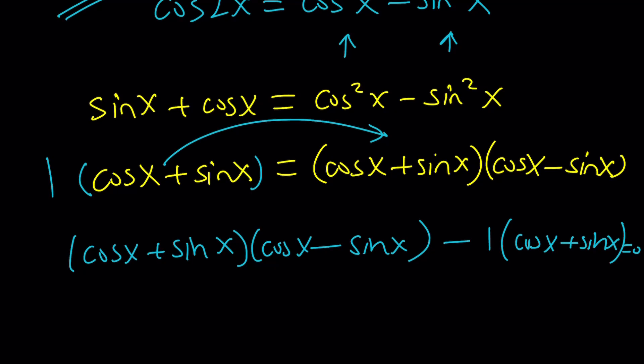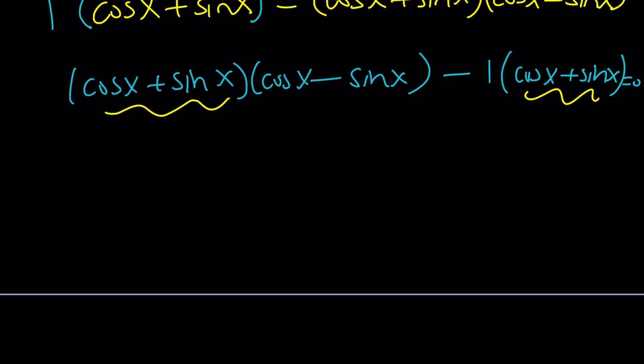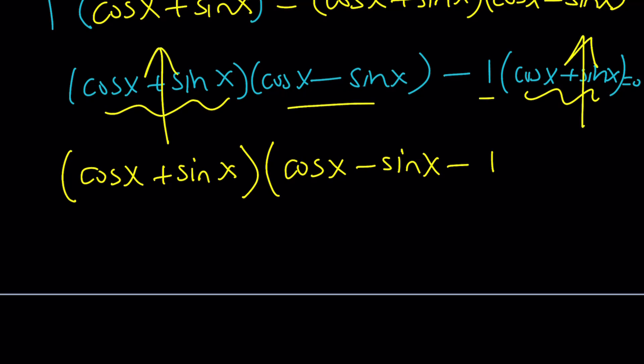Awesome. Now, notice that cosine x plus sine x is a common factor. So take out cosine x plus sine x, and then the other factor is going to be cosine minus sine minus 1. Remember, you have to cover this one and this one, and whatever is left, that's going to be the other factor. And, of course, set it equal to 0. From here, we get two things. Cosine x plus sine x is equal to 0.